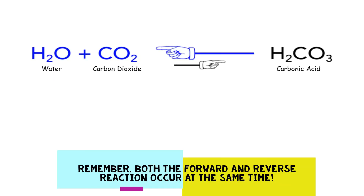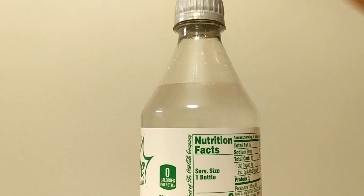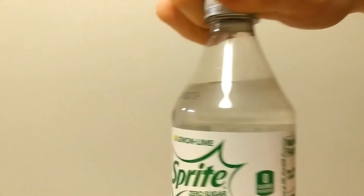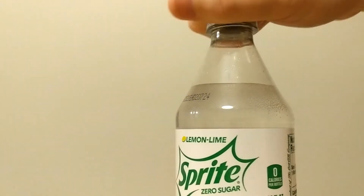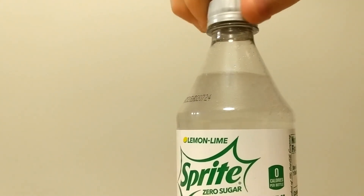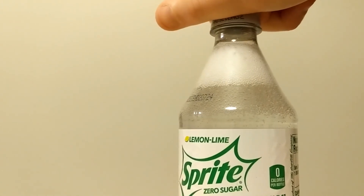This is the chemical equation for the reaction occurring in soda. At equilibrium, carbon dioxide reacts with water to form carbonic acid, while carbonic acid dissolves back into water and carbon dioxide. When we open the soda bottle, the carbon dioxide in the air part of the bottle escapes and the pressure drops. As a result, the reaction shifts to the left. Carbonic acid dissolves back into water and carbon dioxide, and the carbon dioxide escapes as the bubbles we see.